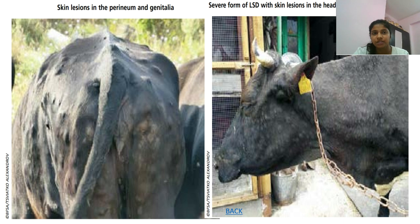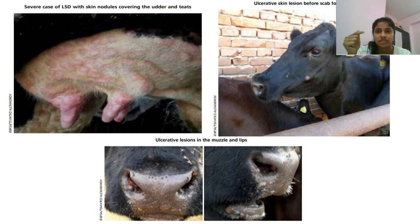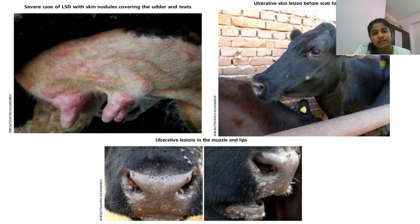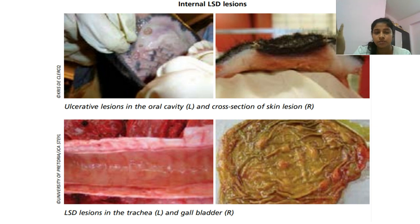The pictures show: on the left side, skin lesions in the perineum and genitalia; on the right side, lesions near the head and neck. The upper left shows lesions near the udder and teeth in a severe case. The right side shows ulceration before scar formation. Below, there are ulcerative lesions in the muscle and legs. Internal LSD lesions include ulcerative lesions in the oral cavity, cross-section of skin lesion, LSD lesions in the trachea and bladder seen on post-mortem.